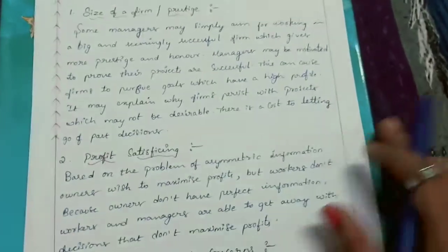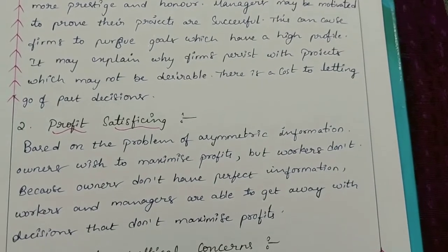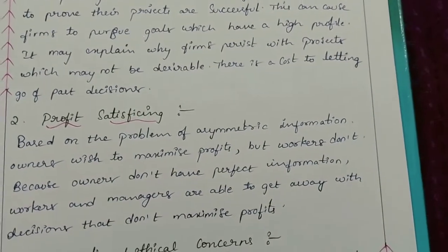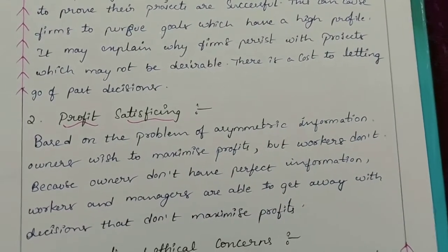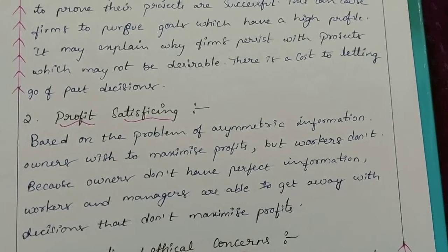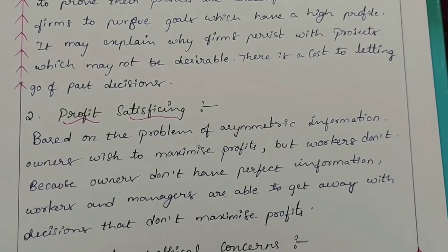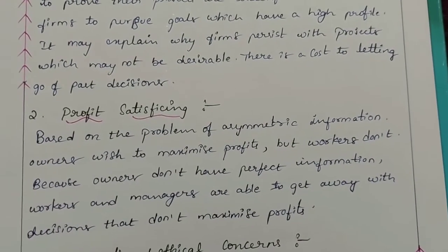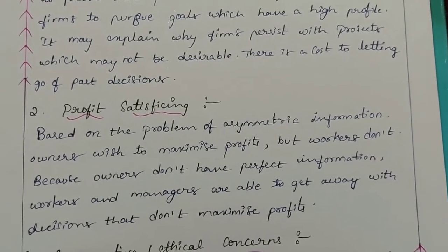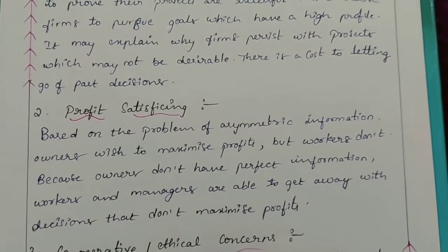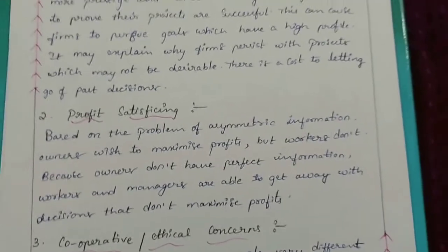Element 2: Profit Satisfying. Based on the problem of asymmetric information, owners wish to maximize profits but workers don't. Because owners don't have perfect information, workers and managers are able to get away with decisions that don't maximize profits.